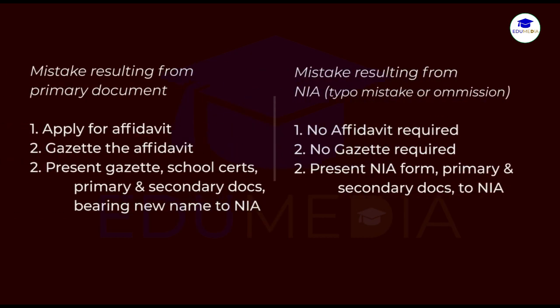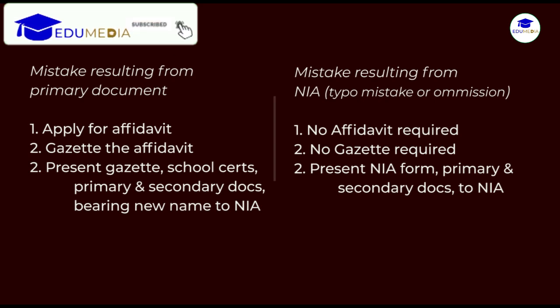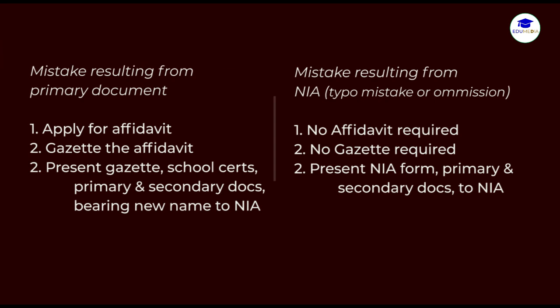So, the key takeaway from this video is: first, when you realize there's a mistake on your Ghana Card, check the document you presented to confirm if the mistake resulted from your primary document or not. If it is a mistake resulting from the primary document you presented, then you need to get an affidavit and gazette it before the correction can be effected. The second thing is that if it is a mistake resulting solely from the registration form — meaning there's no mistake on the birth certificate or passport you presented — then you do not need an affidavit and gazette for the changes. It is difficult to cover all scenarios of a mistake, so I advise you to approach any of the NIA offices for a special look at your issue if you find it difficult to understand the mistake.